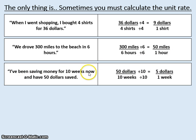I've been saving money for 10 weeks now and have $50 saved. You've made a rate comparison, $50 is 10 weeks, but you need to reduce it by 10 to get the amount of money in one week. This is a unit rate because it's comparing how much for one.